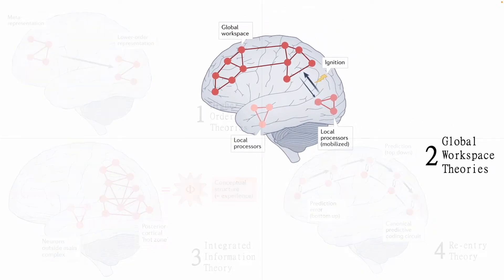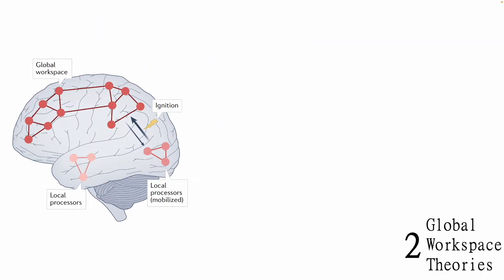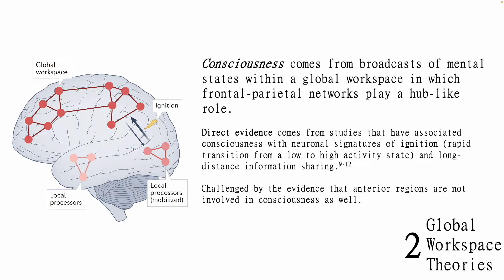Our second theory is global workspace theory. Looking at the figure, global workspace theories say that mental states are conscious when they are broadcast within a global workspace. To get there, local processes are mobilized by ignition, which is supported empirically by links between ignition and long-distance information sharing with consciousness. Seth and Bain identify that global workspace theories, like higher order theories, are concerned with what makes a representation of stimuli conscious. For example, if we look across the room, why is our perception of someone's face conscious, but what is occurring outside the window not? These theories suggest that attention selects and amplifies specific local processes, which allows them to enter the workspace and become conscious.